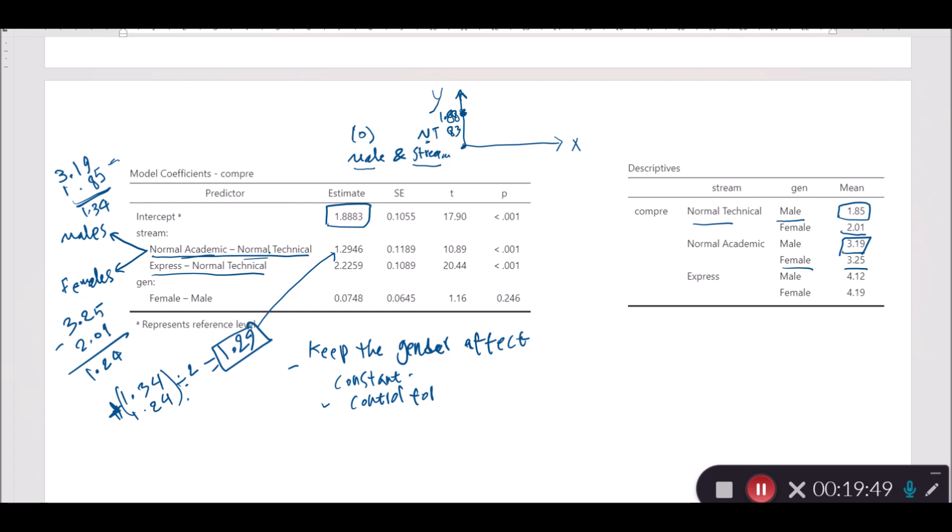For express, for females as you can see it's 4.19. Then for the other group, for females of normal technical, right here it's 2.01. I hope I've not made mistakes as I was doing this analysis, but you can actually do that on your own as well. If I made any mistakes please write them down in the comment section. I'll be happy to listen to your advice.